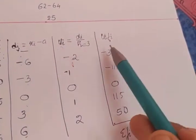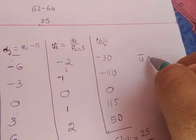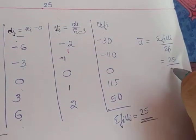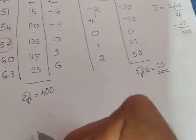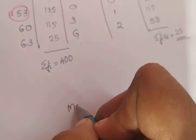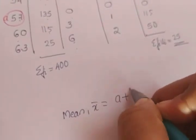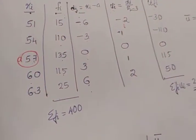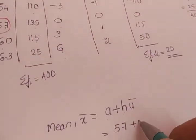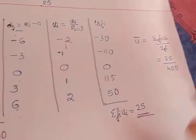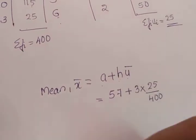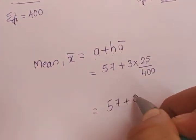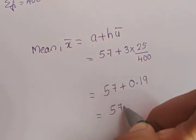After finding fi·ui, we find u-bar. u-bar = sigma fi·ui / sigma fi = 25 / 400. The formula for mean in step deviation method is: x̄ = a + h × u-bar = 57 + 3 × (25/400) = 57 + 75/400 = 57 + 0.19 = 57.19.